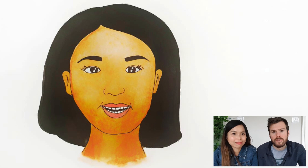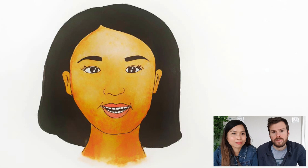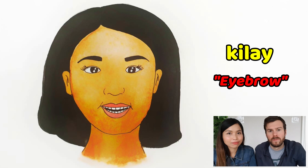And then we need the word for forehead — agtang. Forehead is agtang. Next we have eyebrow — kilay. Eyebrow is kilay.